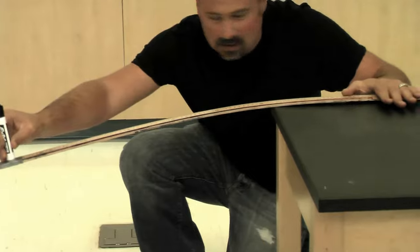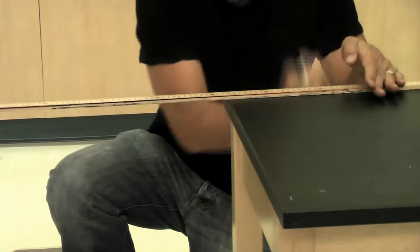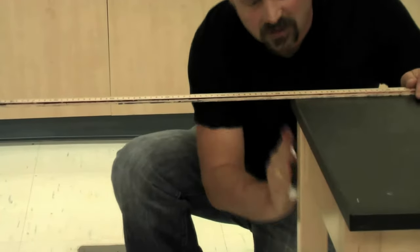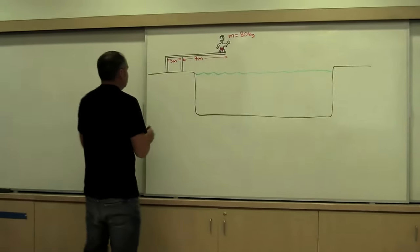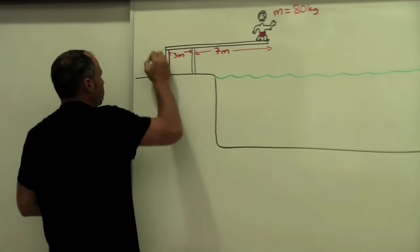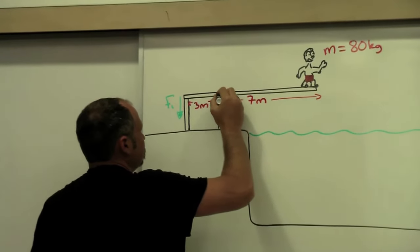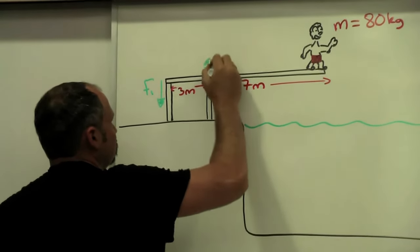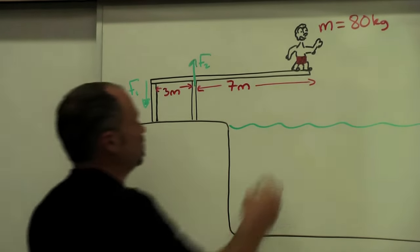So this side has to be pulling it down whereas you can see right here the force here has to be pushing it up. So let's break that in. Here we have a downward force, call this F1, and here we got an upward force, call that F2.